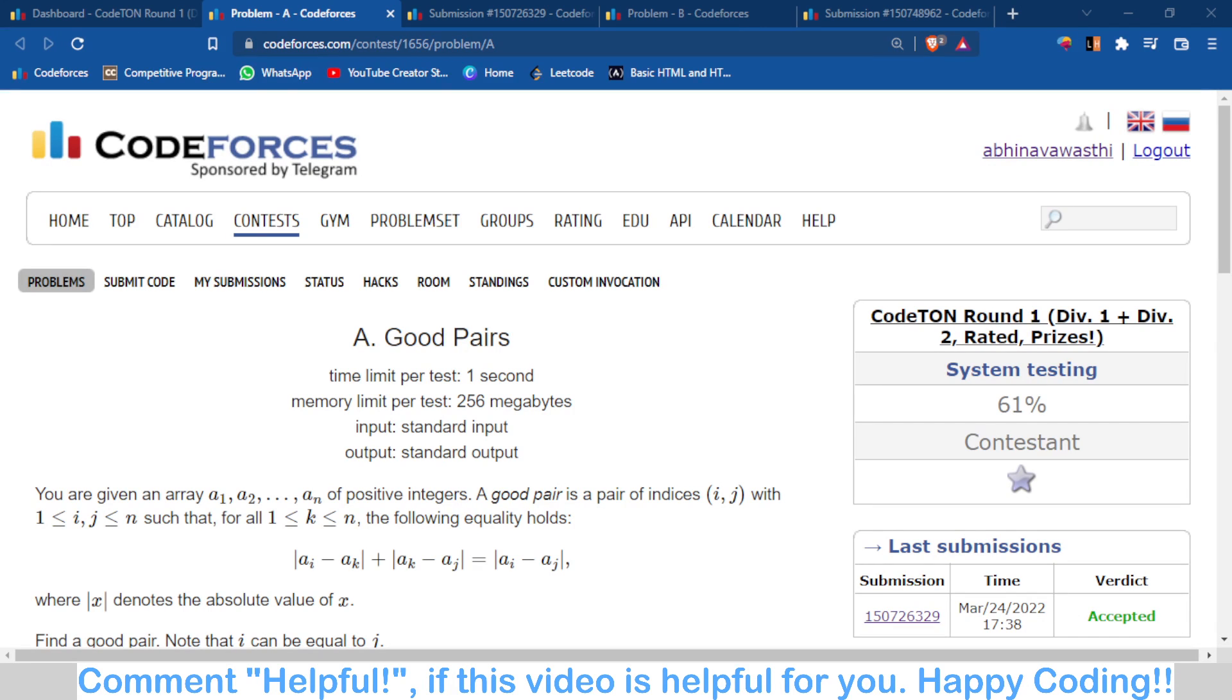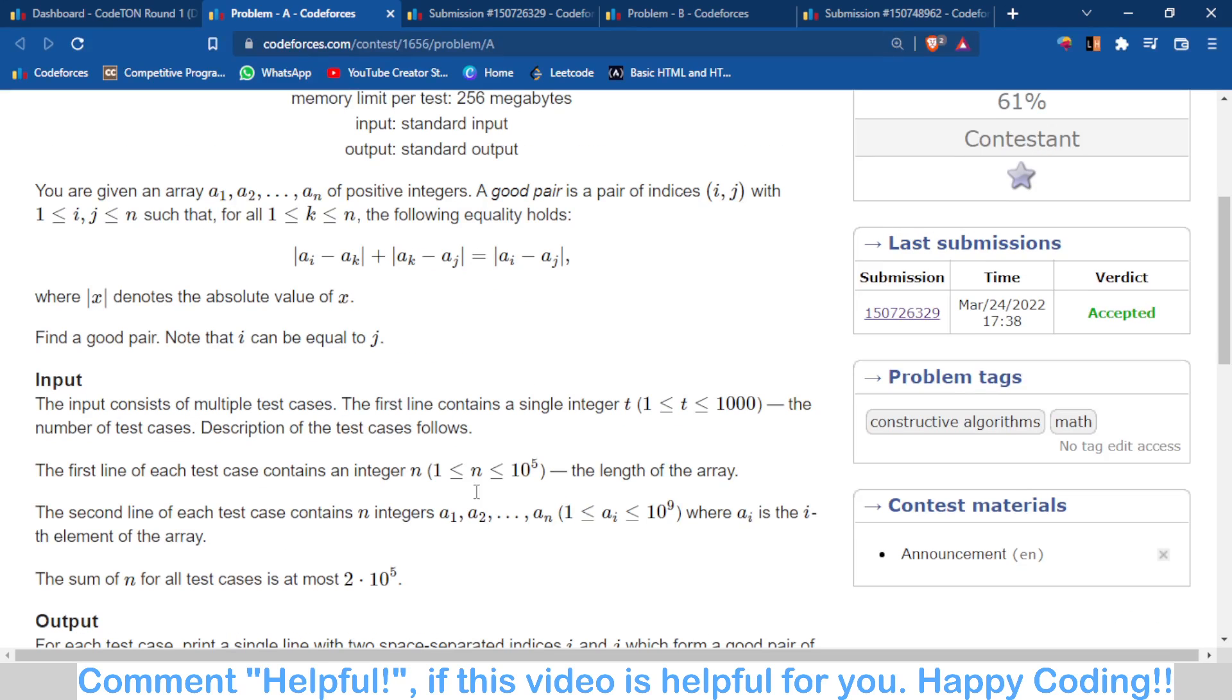Hello and welcome back to the channel, this is Abhinav. In this video we will discuss Problem A of Codeforces Round 1. This was a very easy problem where we have to make only one observation. You are given an array of n numbers and you have to find two such elements, a good pair.